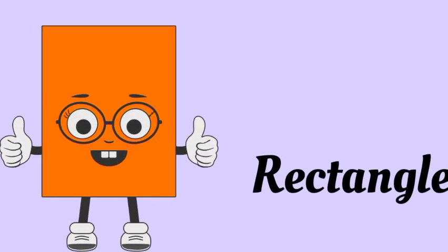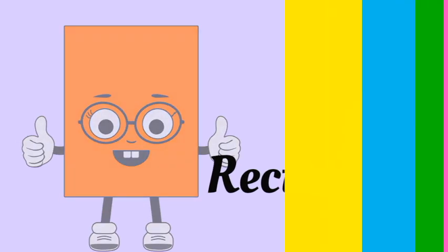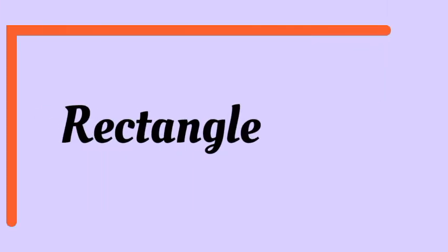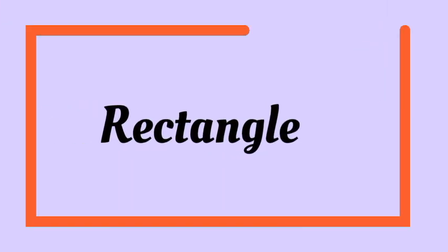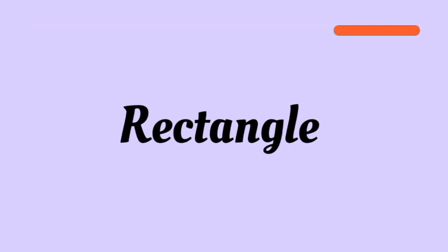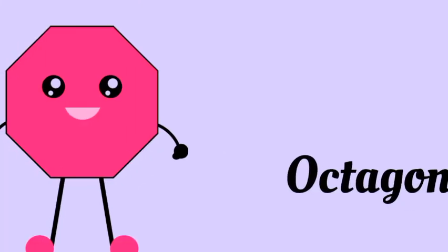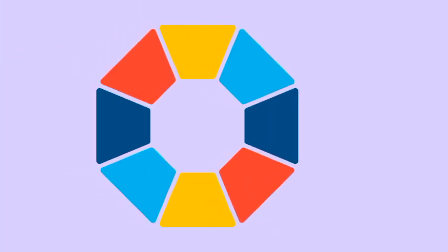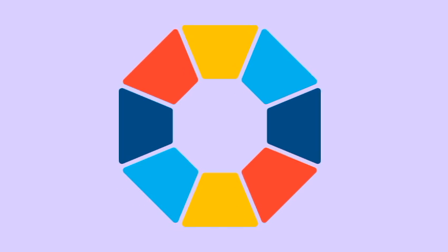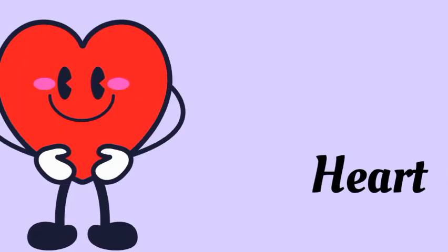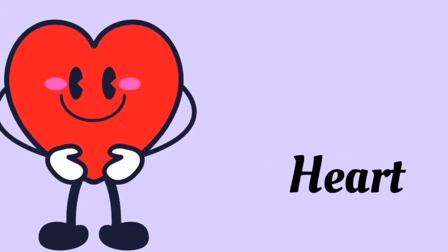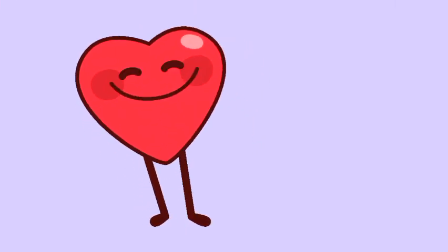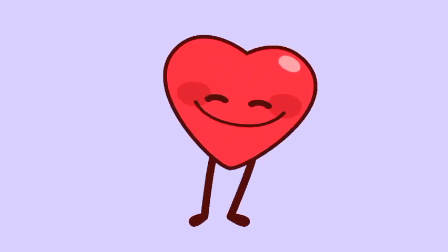Rectangle — rectangle has four sides and four angles. Octagon — octagon has eight sides and eight angles. Heart — heart has no sides and two angles.